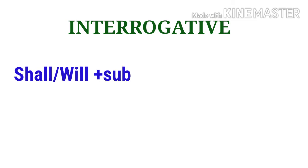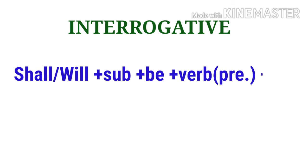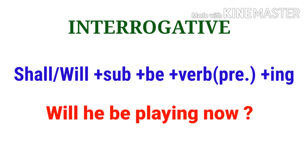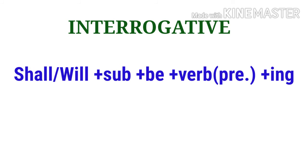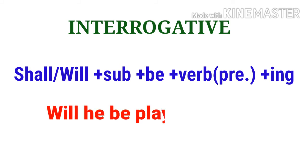The interrogative formula is: Shall/will plus subject plus be plus main verb in present form plus -ing. Example: 'Will he be playing now?' Here, 'will' is the auxiliary verb, 'he' is the subject, 'be' follows, and the main verb is 'playing.' So the sentence is: Will he be playing now?